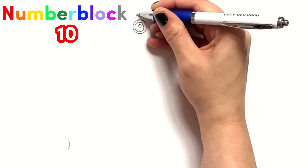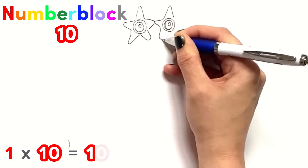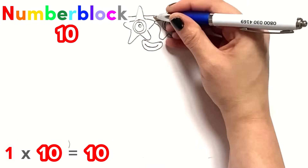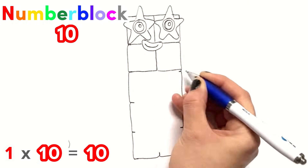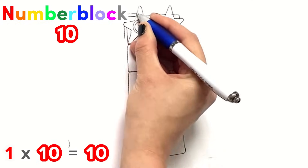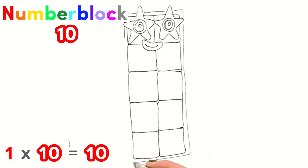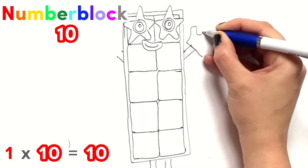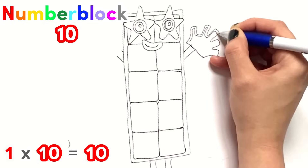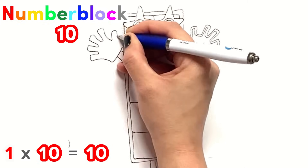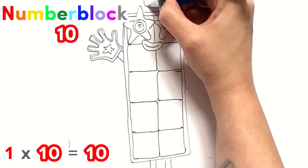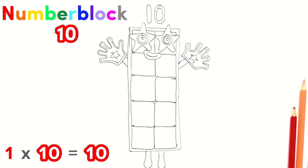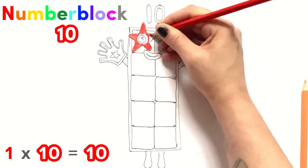First up, we're drawing and colouring NumberBlock 10, which is 1 times 10 equals 10. So it's done!